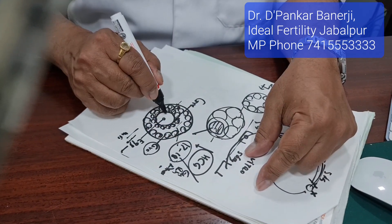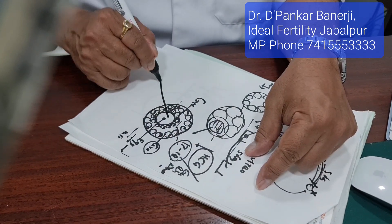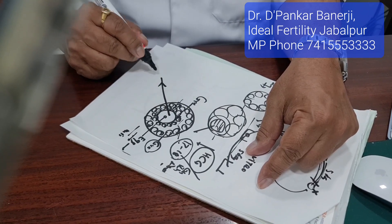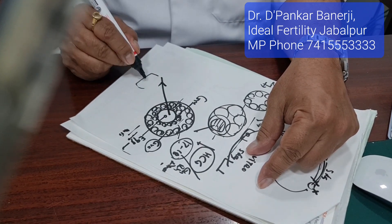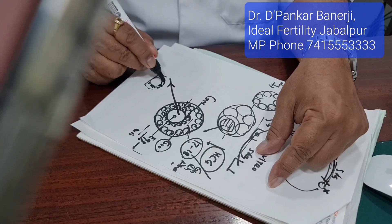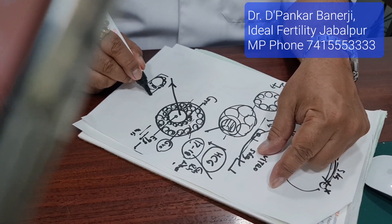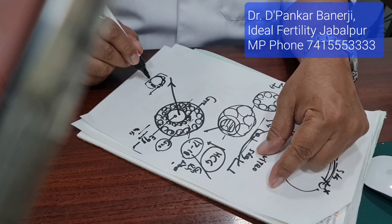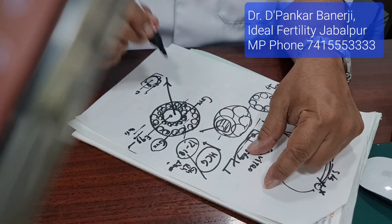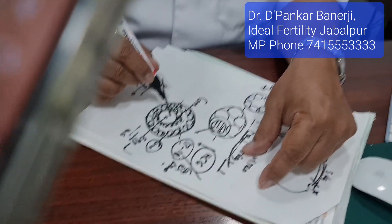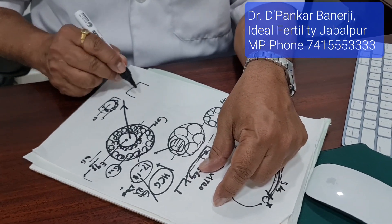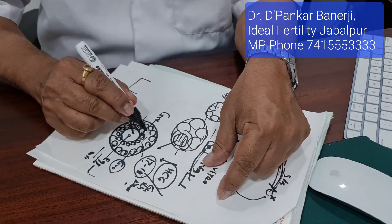After this, we put a needle inside the follicle and suck it out. When we suck it out, we get the egg along with these cells — the coronal cells and the oocyte.